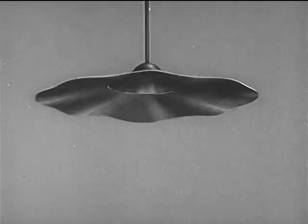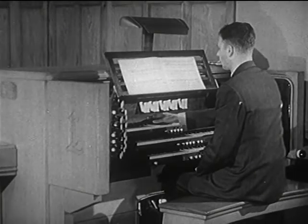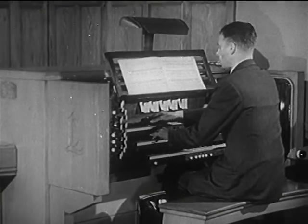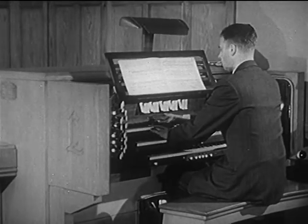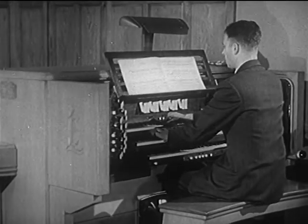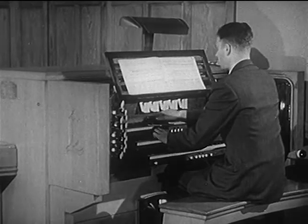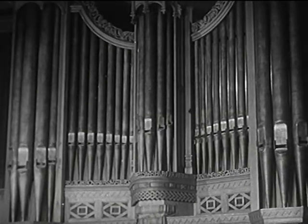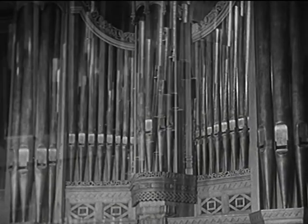The third of the principal sources of sound is the vibrating column of air. The organ pipe, like the woodwind, produces sound by means of such an air column. Often, the exposed pipes of an organ are merely decorative, and sounds are produced by the pipes in the organ loft.